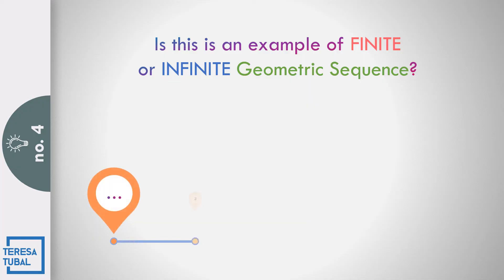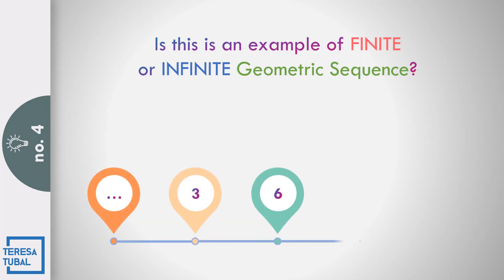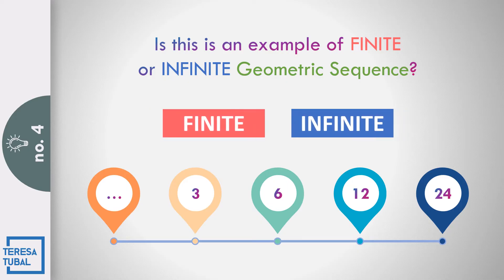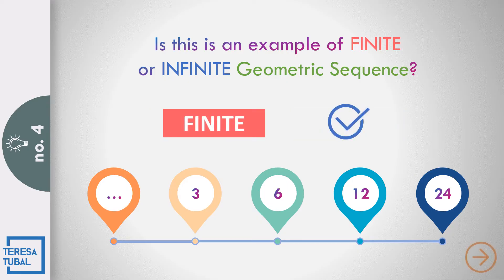Is this an example of finite or infinite? The sequence shows three dots, then 3, 6, 12, and 24. The answer is infinite, because before 3 there is no beginning — you don't know when it starts. So that is infinite.